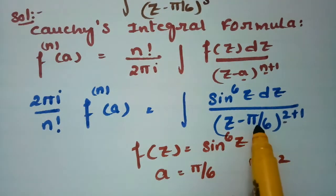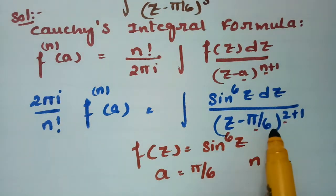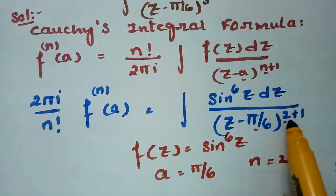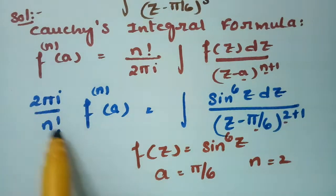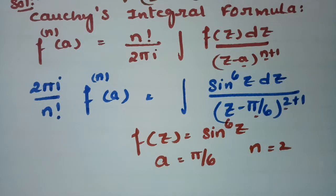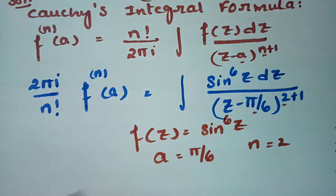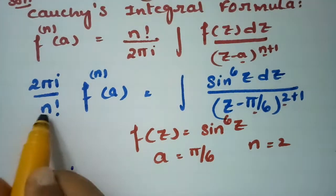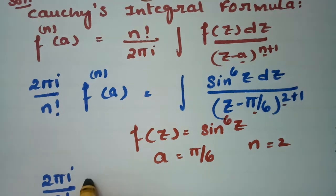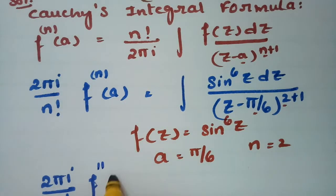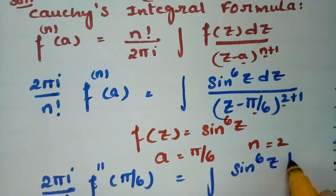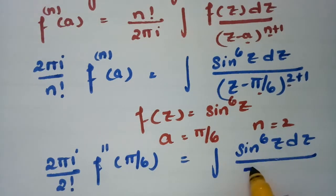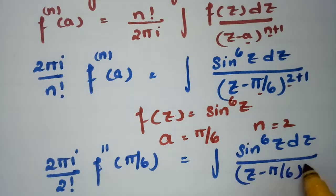So the three identified values are: a = π/6, n = 2, and f(z) = sin⁶z. Substituting into the formula, the integral equals 2πi times 2 factorial times the second derivative of f at a, where a = π/6.